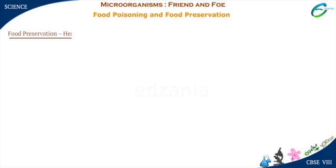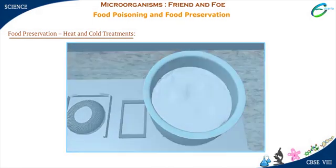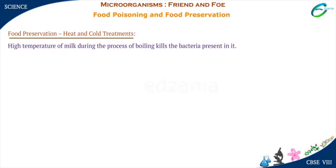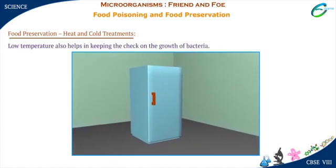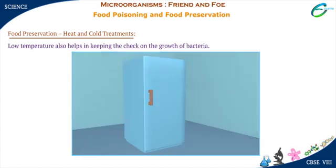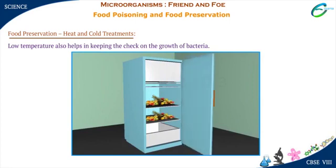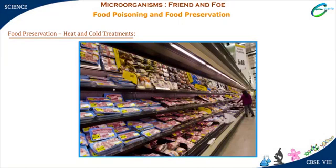Heat and cold treatments: Why do we boil milk before it is consumed? High temperature of milk during the process of boiling kills the bacteria present in it. Similarly, low temperature also helps in keeping the check on the growth of bacteria. Therefore, we keep food in the refrigerator when not required. Milk and meat products are kept in cold storage in supermarkets.